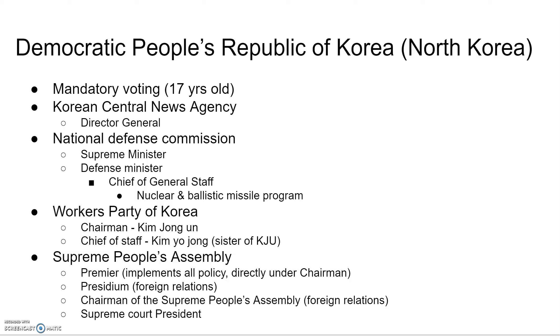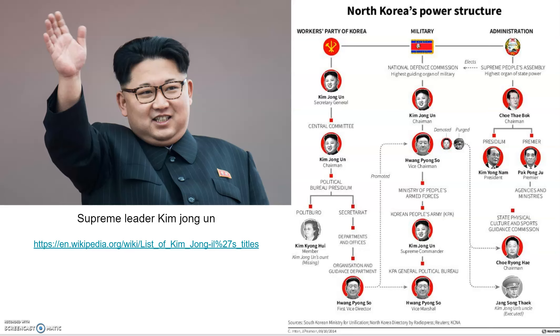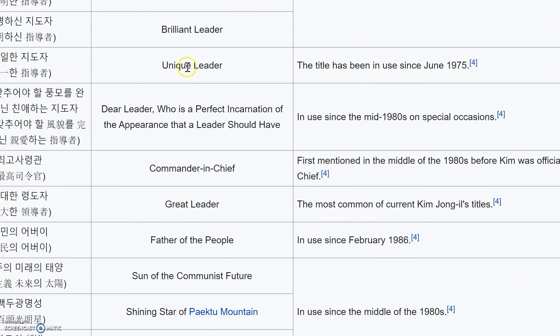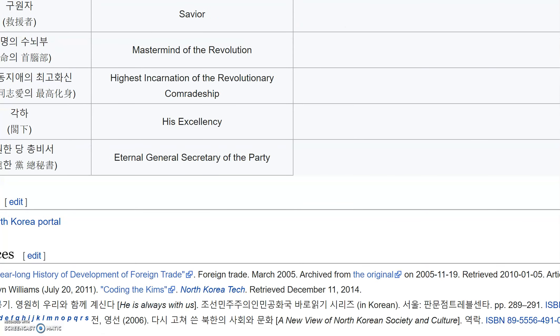North Korea has the Supreme People's Assembly, which has a premier, a president, a chairman of the Supreme People's Assembly, and a Supreme Court president. Kim Jong-un is the Supreme Leader and his power is distributed throughout the rest of the nation. A linked list of titles that Kim Jong-un currently holds is quite long.